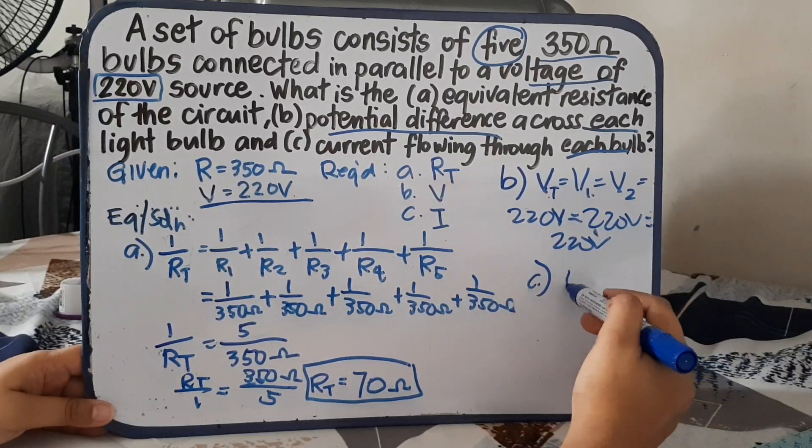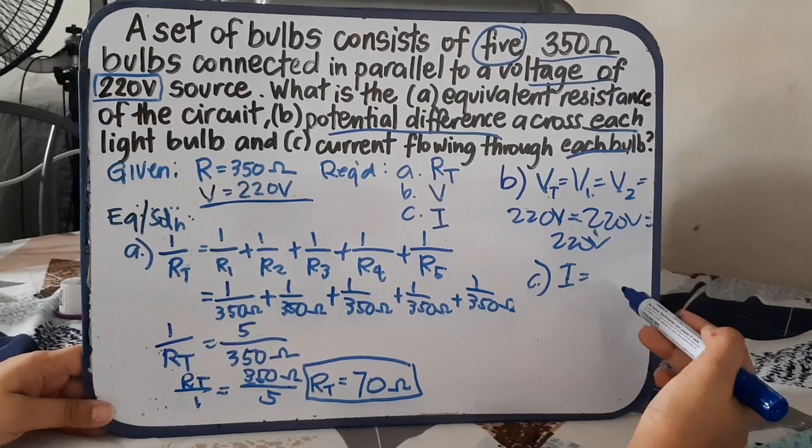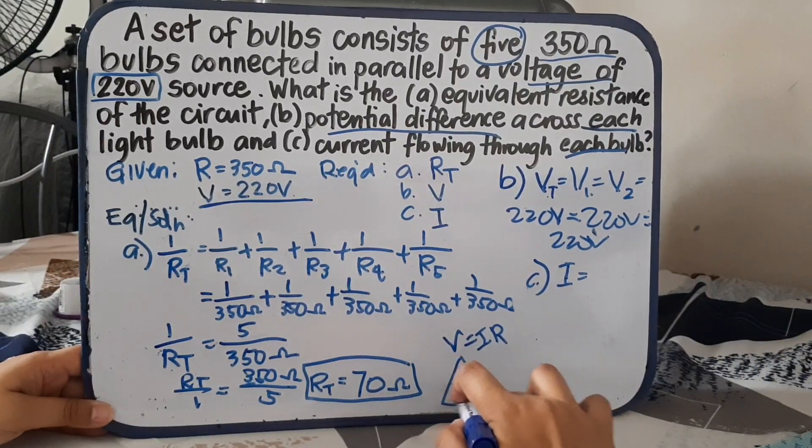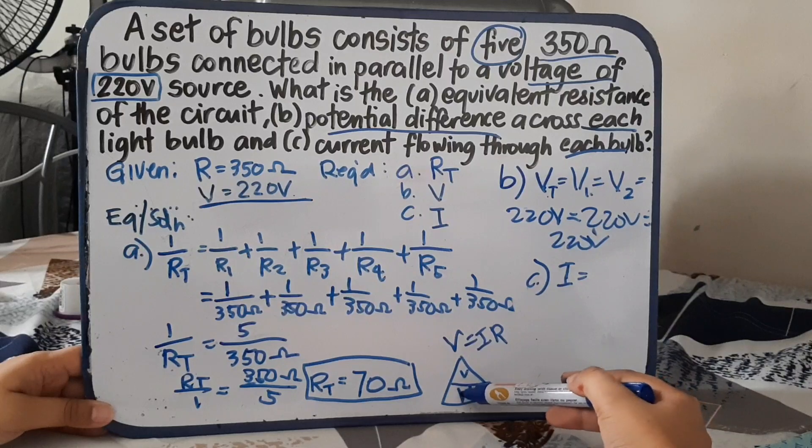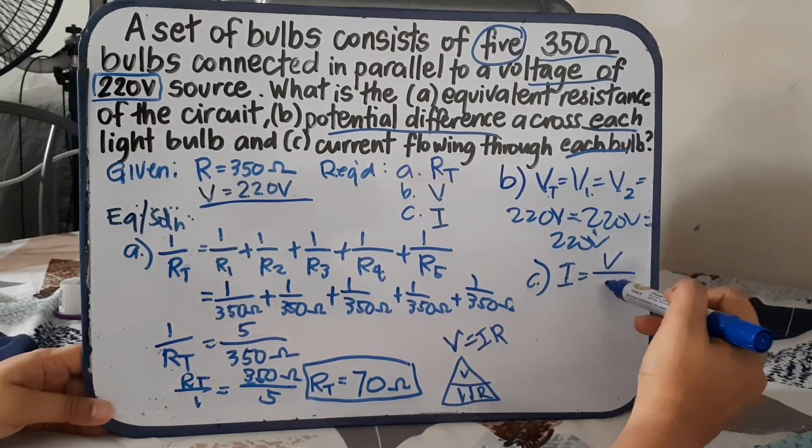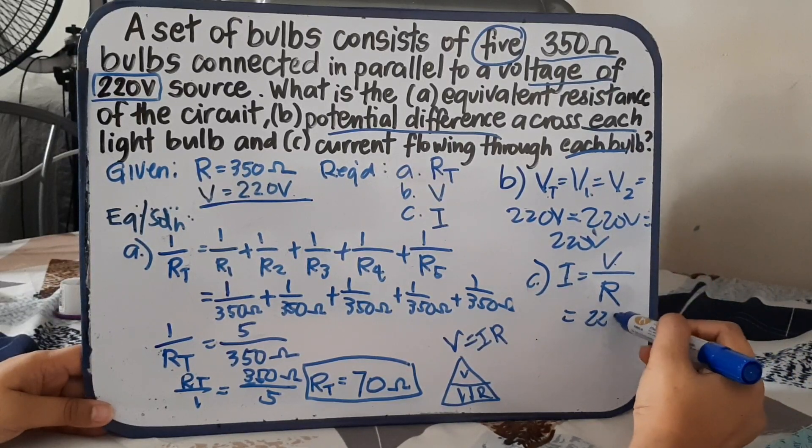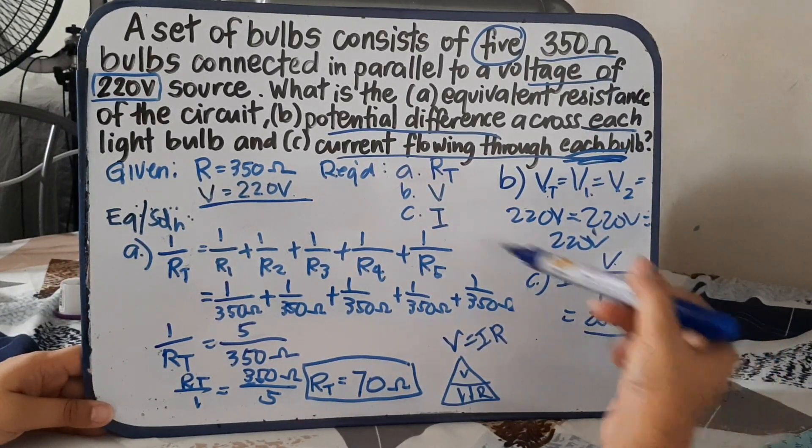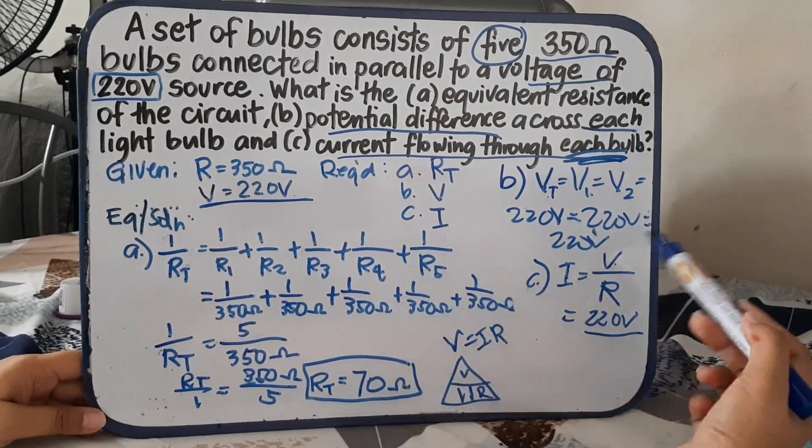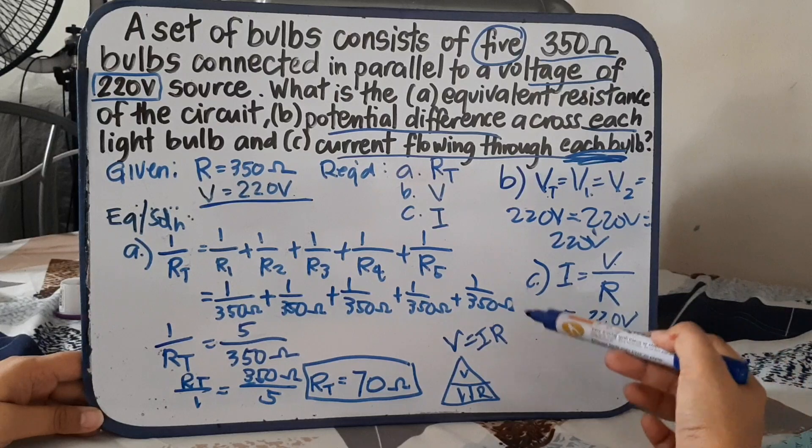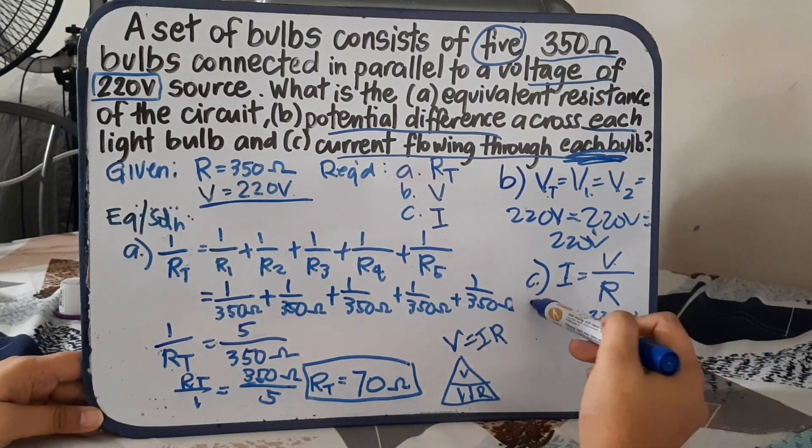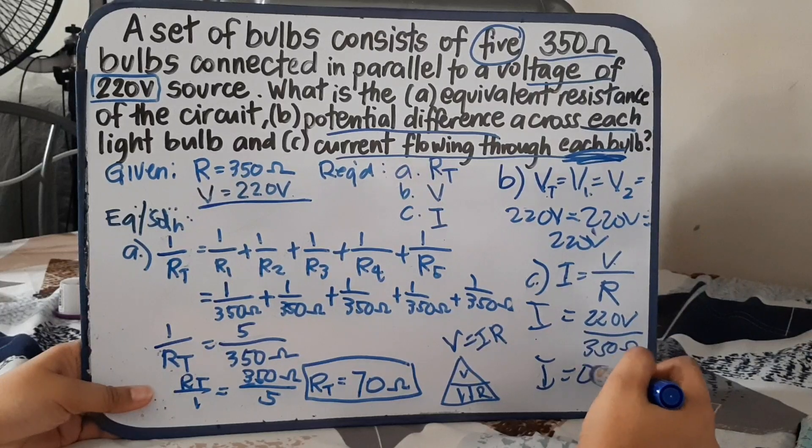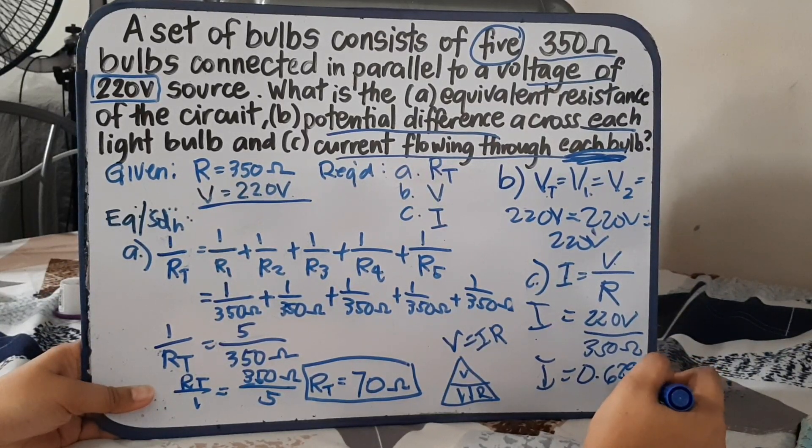Now for the individual current. How do we get the current? Our formula is V equals IR. To get the I, we have to use the equation V over R. What is our voltage? That's 220 volts. The question asks for current flowing through each. So what resistance will we use now? Is it the 350 or the 70 ohms? And since each bulb, individual resistance, we will use the 350. So 350 ohms. Our total current is equivalent to 0.629 ampere.